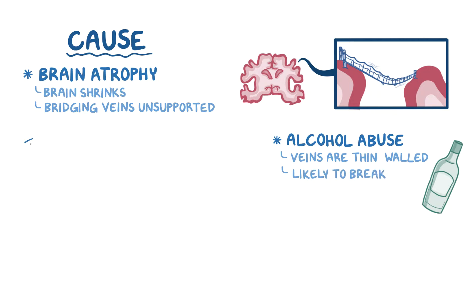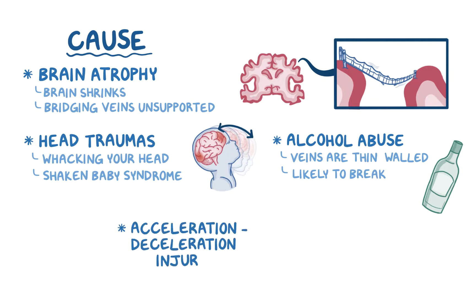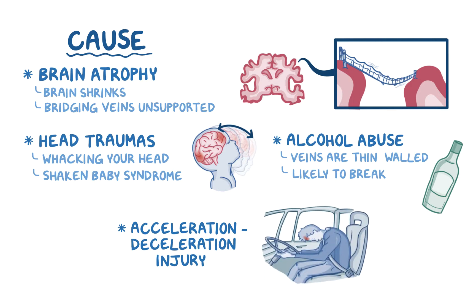Subdural hematomas are common in head traumas, like falling in a wet bathtub and whacking your head, or in shaken baby syndrome, where a baby is violently shaken, making their head whip back and forth which damages the bridging veins. Subdural hematomas can also happen after an acceleration-deceleration injury, like speeding on the road and then suddenly slamming on the brakes. When that happens, the seatbelt will stop the body and head from moving forward, but the momentum will carry the brain forward where it impacts the front of the skull. Right after that, the head moves backwards and hits the headrest, causing the brain to impact the back of the skull. That rapid back and forth movement once again causes damage to the bridging veins.